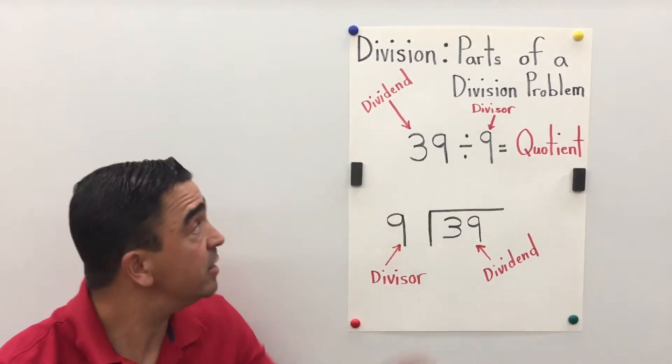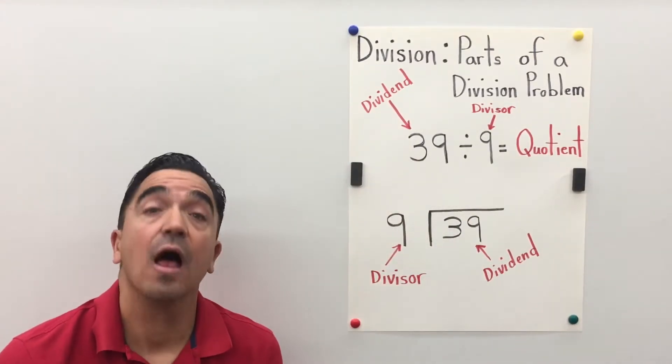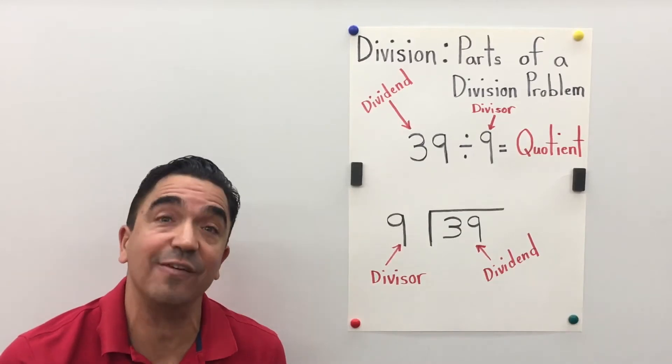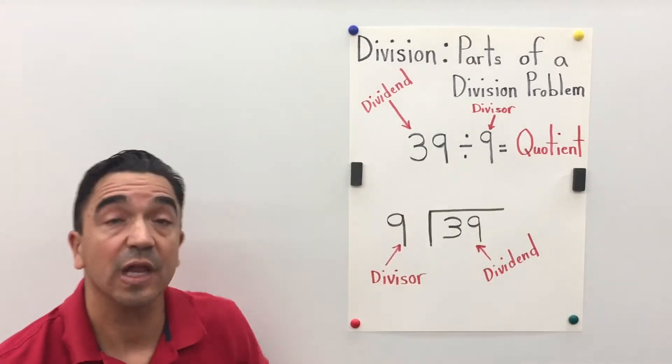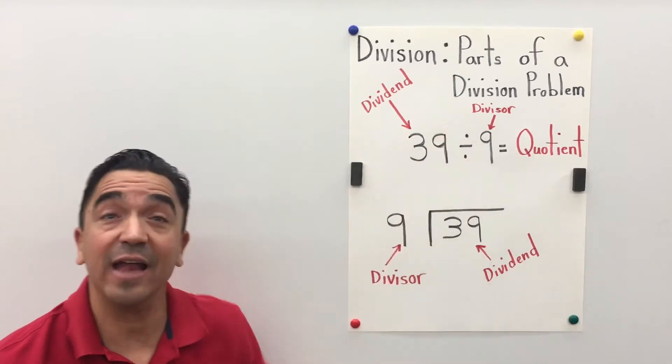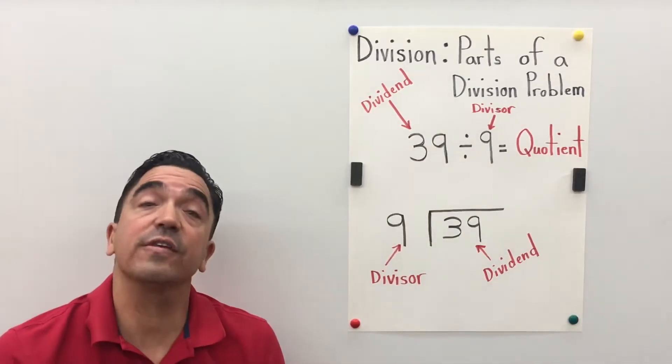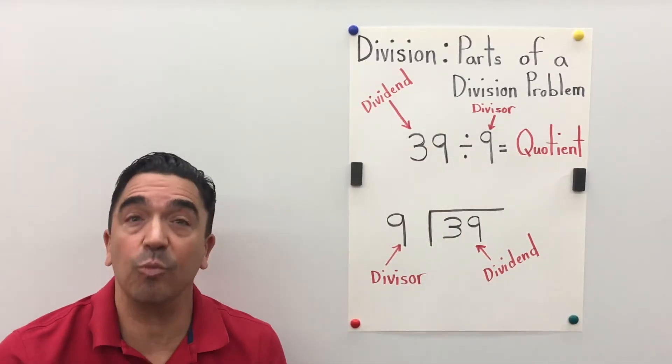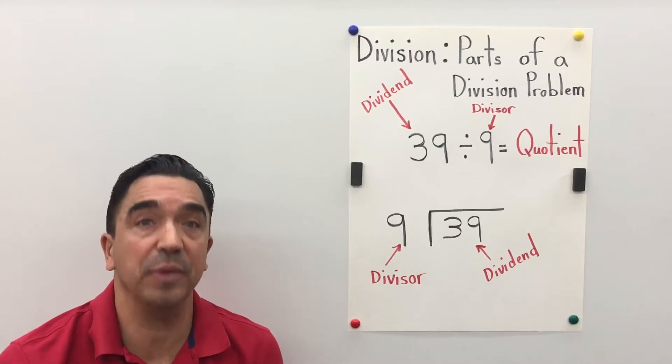39 is the dividend. The dividend is the number being divided. 9 is the divisor. The divisor is the number by which the dividend is being divided.